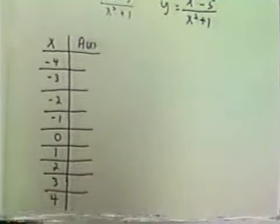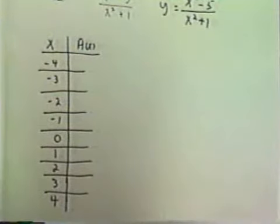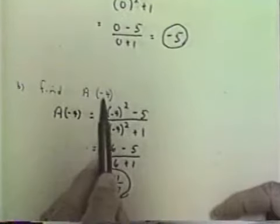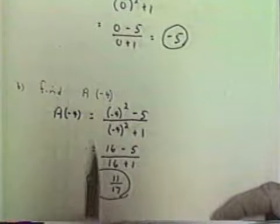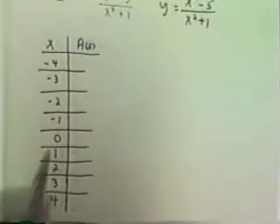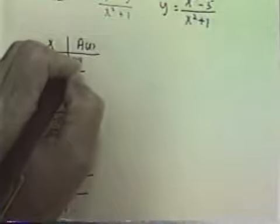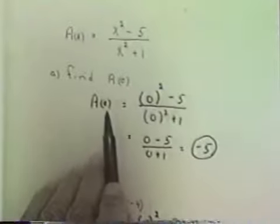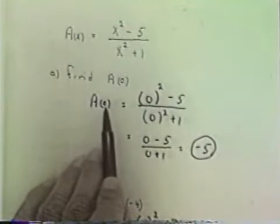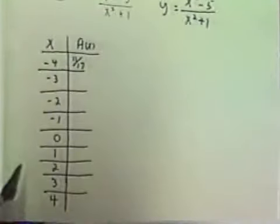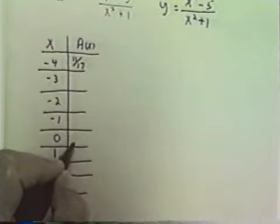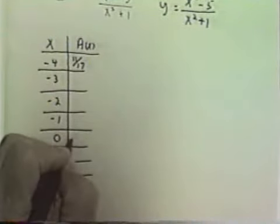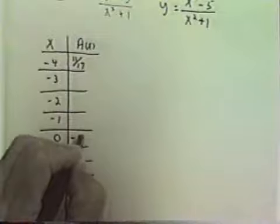Now we've already evaluated a for negative 4 and we know the answer there is 11 seventeenths. So we know we have 11 seventeenths. We've also already evaluated a at 0 and the answer is negative 5. So for x equals 0 the answer is negative 5.